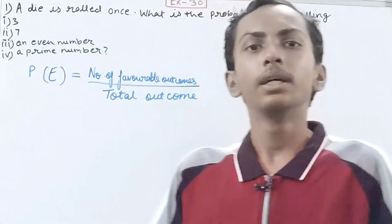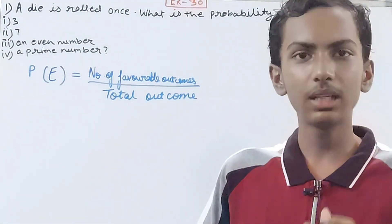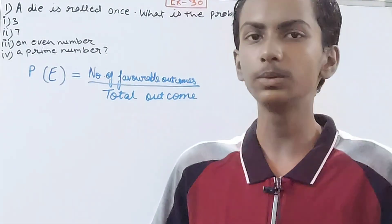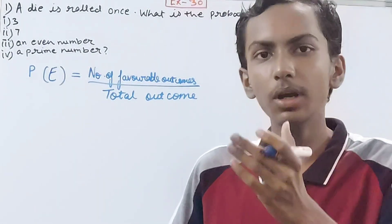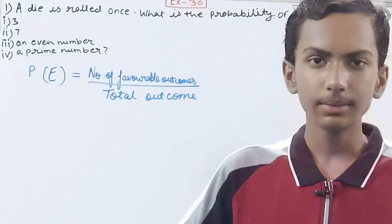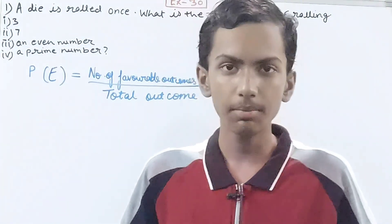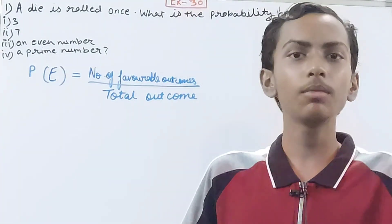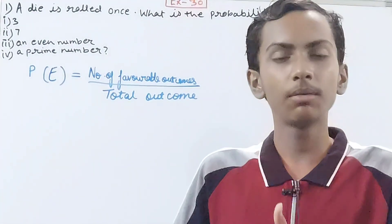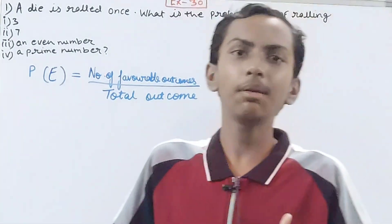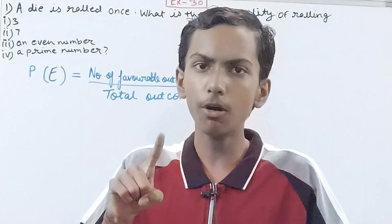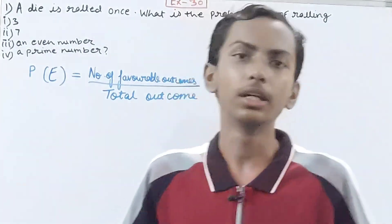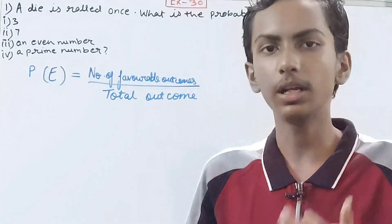Whenever we have to calculate the probability of any given event, we just see how many favorable outcomes there are and divide by the total number of outcomes. For the rain example, either it will rain tomorrow or it will not — total outcomes are two, and for raining it is only one, so the probability is one upon two.